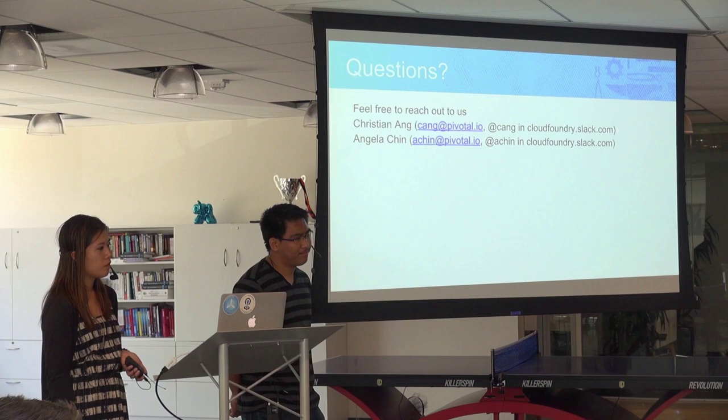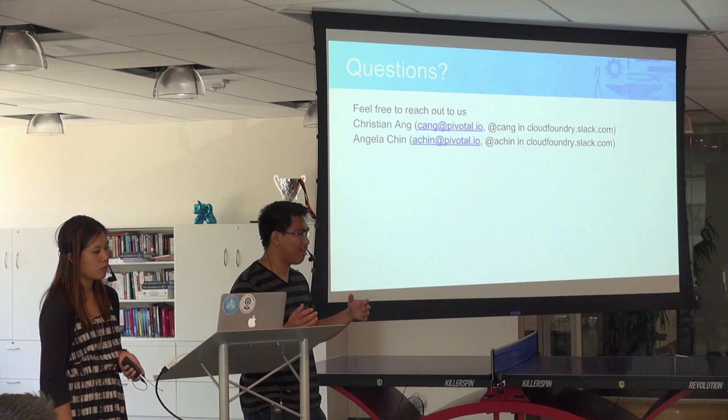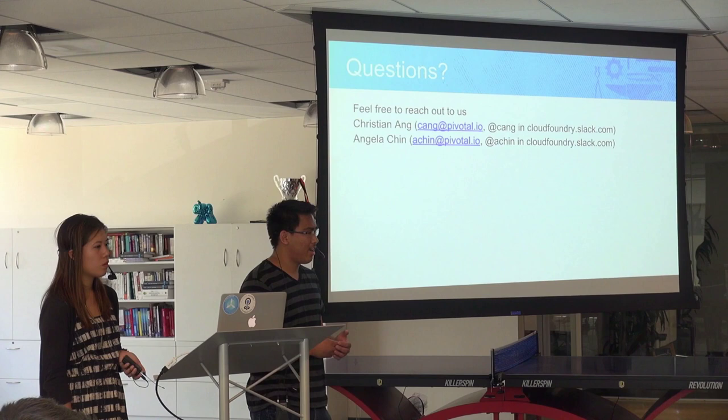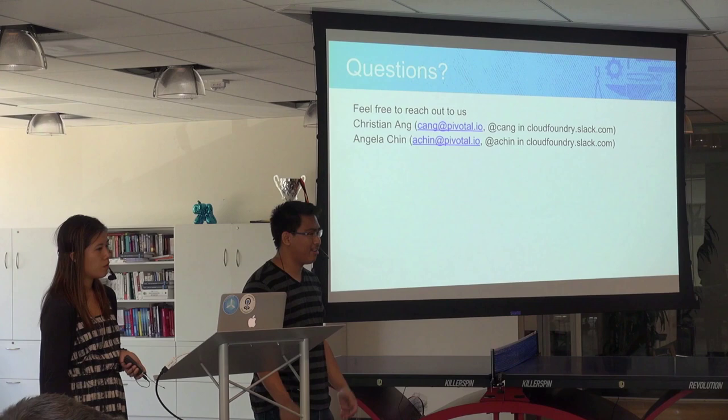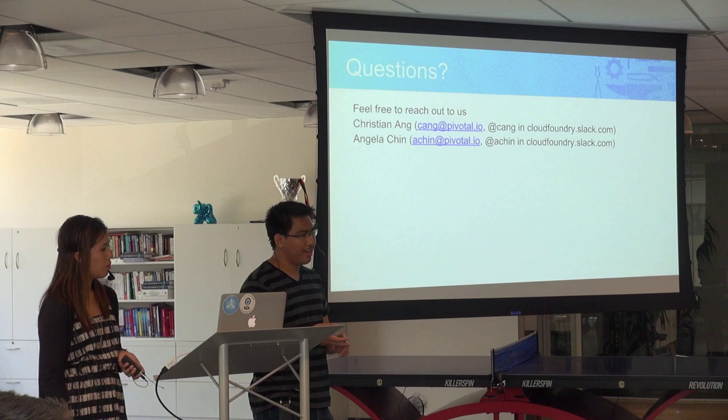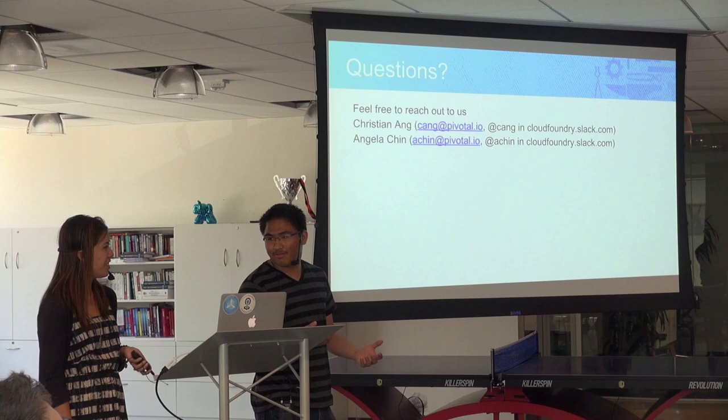Question: Are there manual steps required within those two hours, or is it just waiting? Answer: Most of the time is just waiting for things to compile. If you think about the actual commands to run, there are probably four or five — usually pretty simple. It basically boils down to Bubl Up, Bubl Create LBs, and BOSH Deploy Cloud Foundry. So it's actually three.